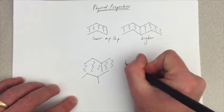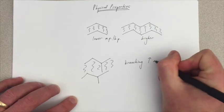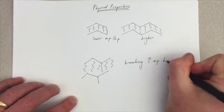So here's another rule. Branching tends to increase melting points and boiling points.